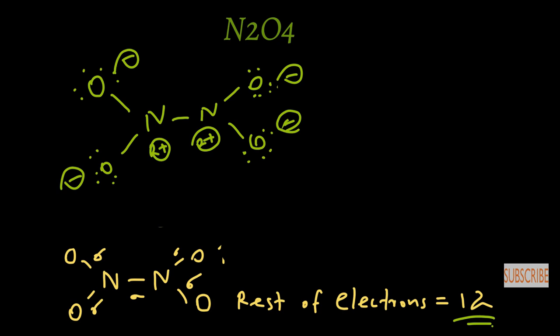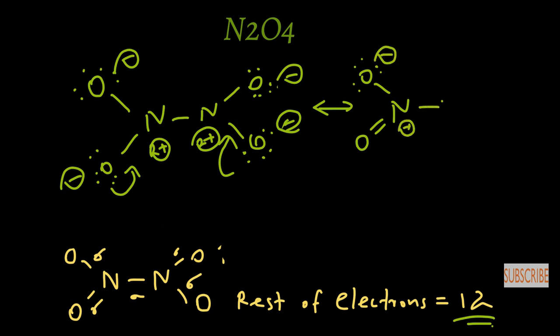By redistributing the electron charges between nitrogen and oxygen, we make five bonds between nitrogen and oxygen. With these additional bonds, we arrive at the most stable structure for N2O4, where each nitrogen forms a double bond with one oxygen, retaining a plus charge on both nitrogen atoms, while the remaining oxygen atoms carry minus charges.